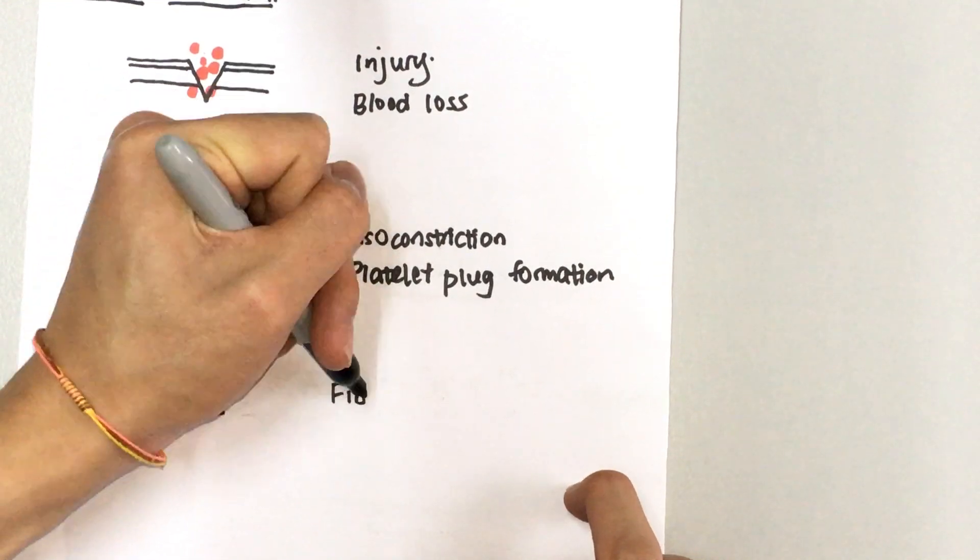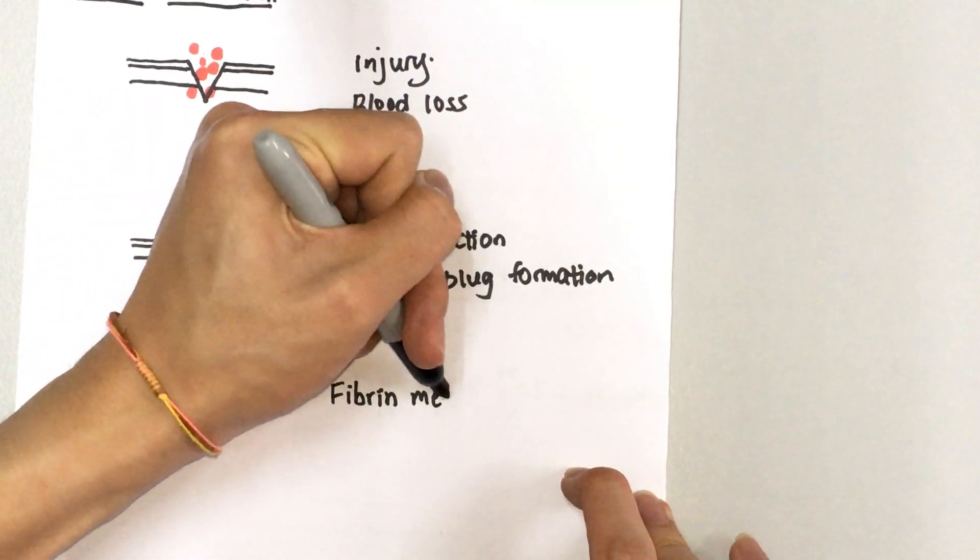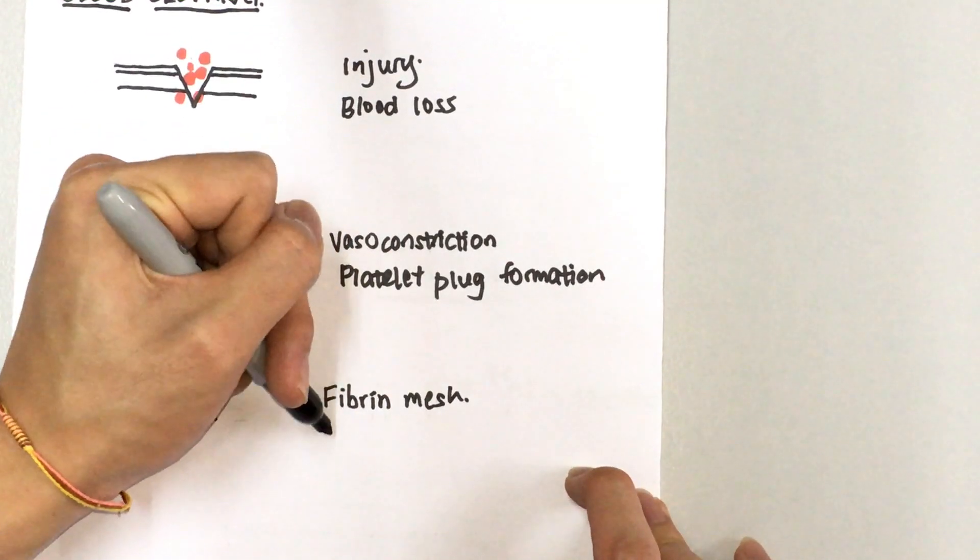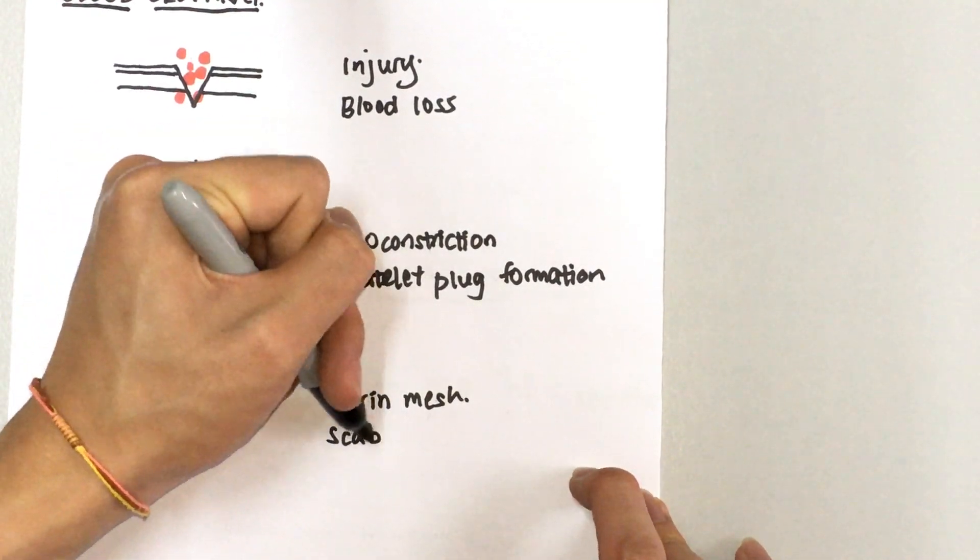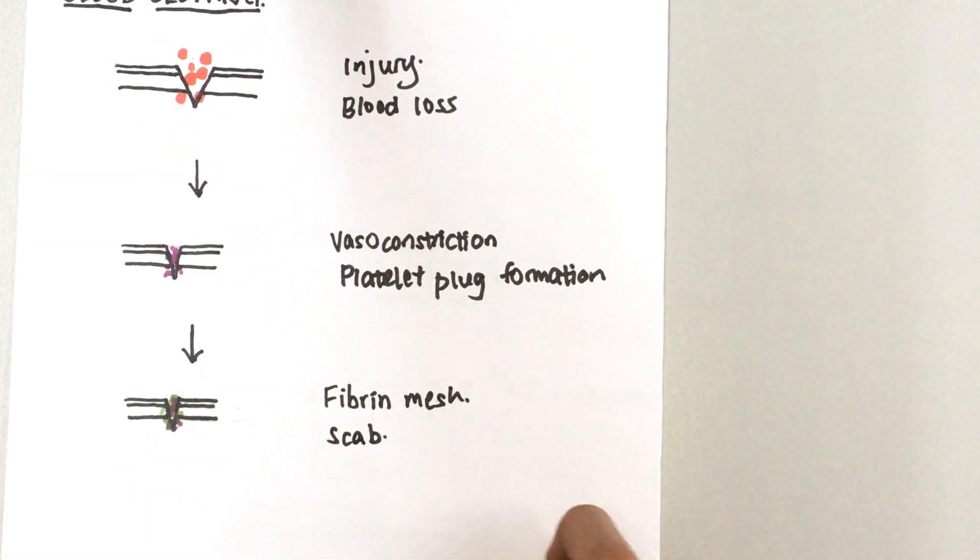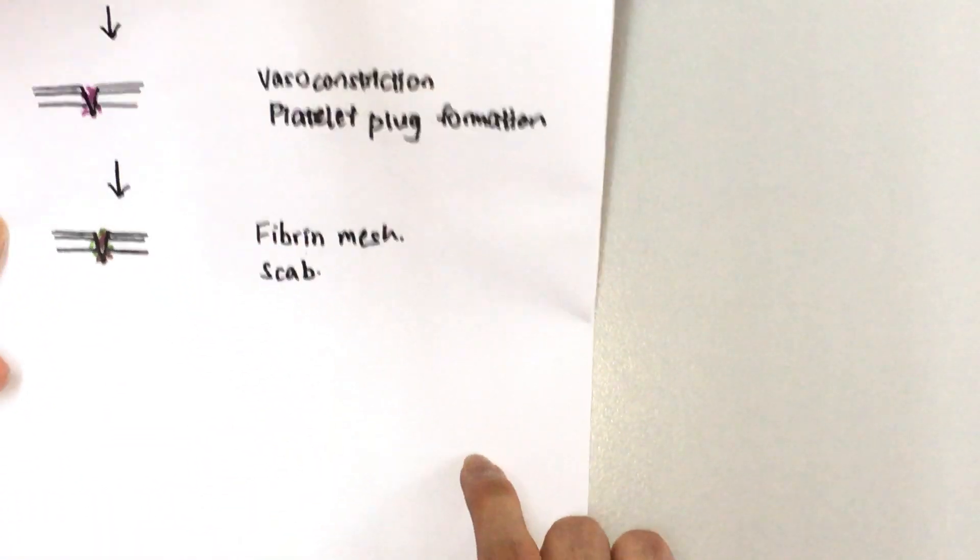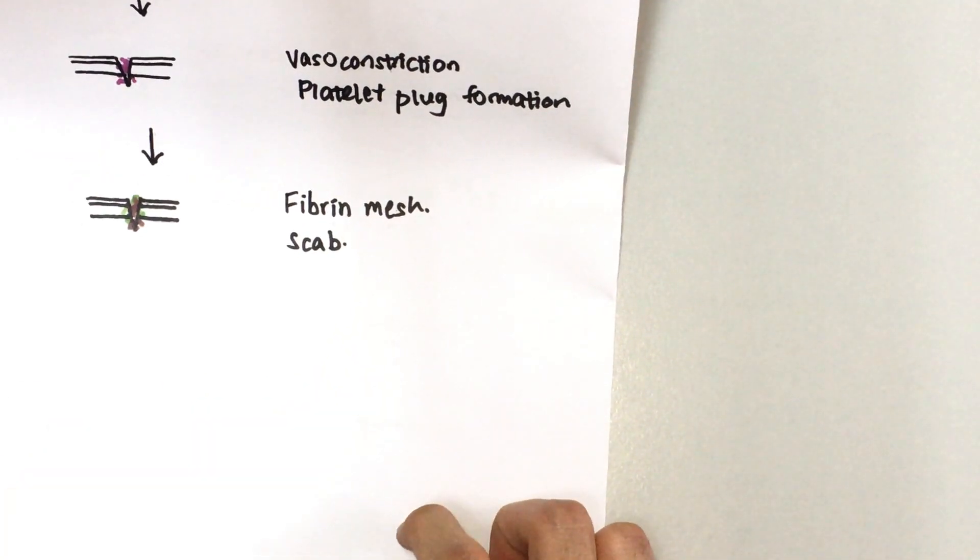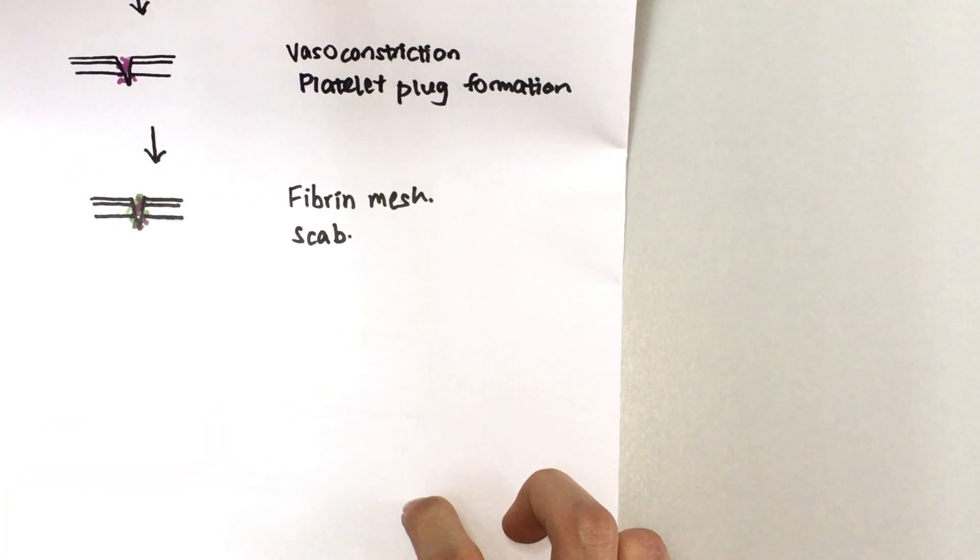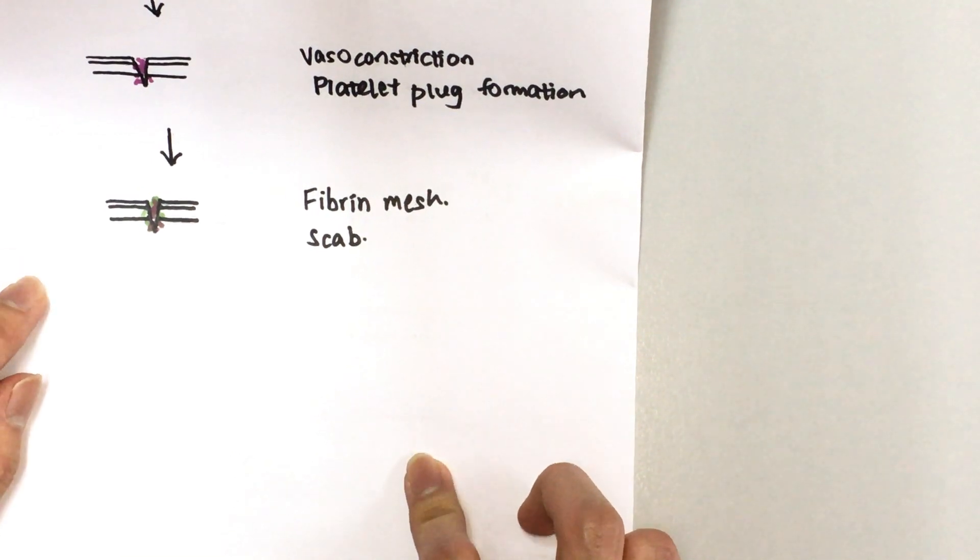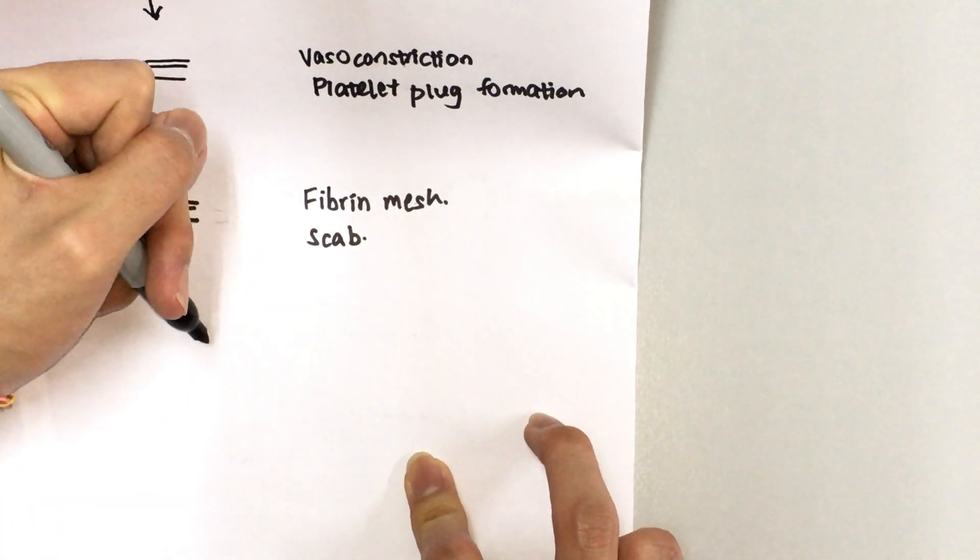we have fibrin mesh, and then finally you would get a scab when it dries up. So let's talk about how fibrin is produced from your body. Now when you are injured, your platelets and the tissue damage would cause this thing...